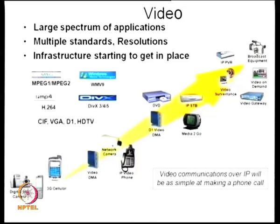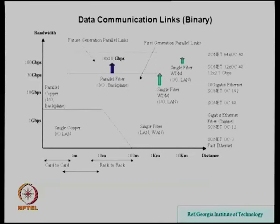The range of video applications includes digital still cameras, broadcast equipment, IP, VPR, and video surveillance — a very important area these days. Connectivity links span fiber, copper, single-mode fiber, and multimode fiber using wavelength division multiplexing as the standard optical signal processing method. These systems may run at data rates of 100 gigabits per second.